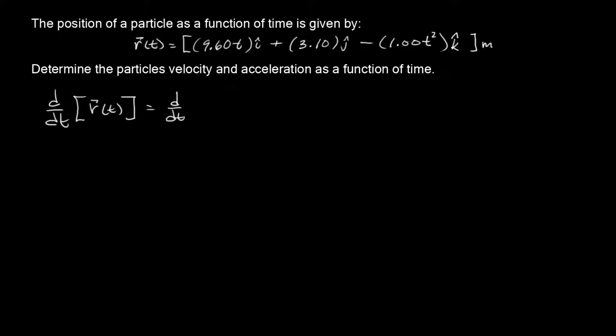So, technically, this is what you're actually doing. You are differentiating this. 9.60 t i hat plus d dt of 3.10 j hat minus d dt of 1.00 t squared k hat.